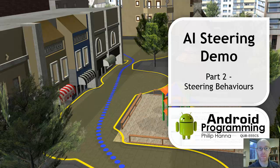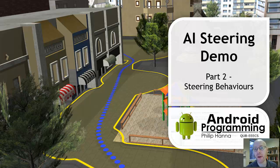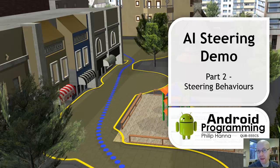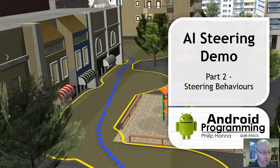This is the second part of our steering demo. In this particular one we're going to have a look at how the steering behaviors were implemented to see how we can seek towards a particular targeted object whilst trying to avoid other ones.